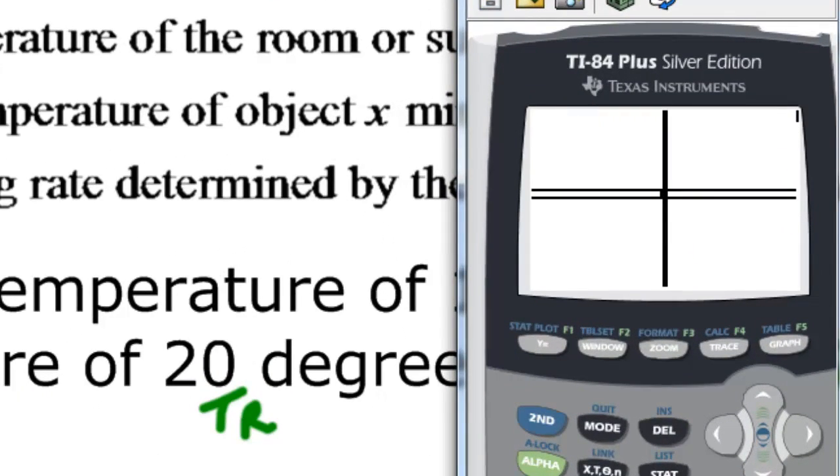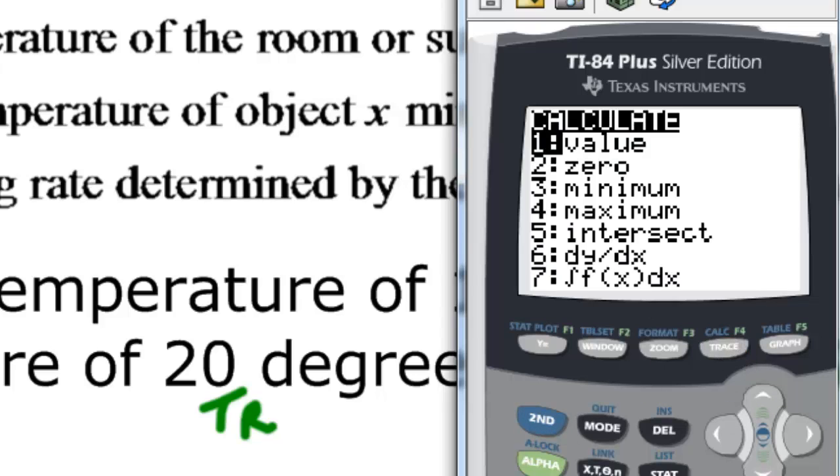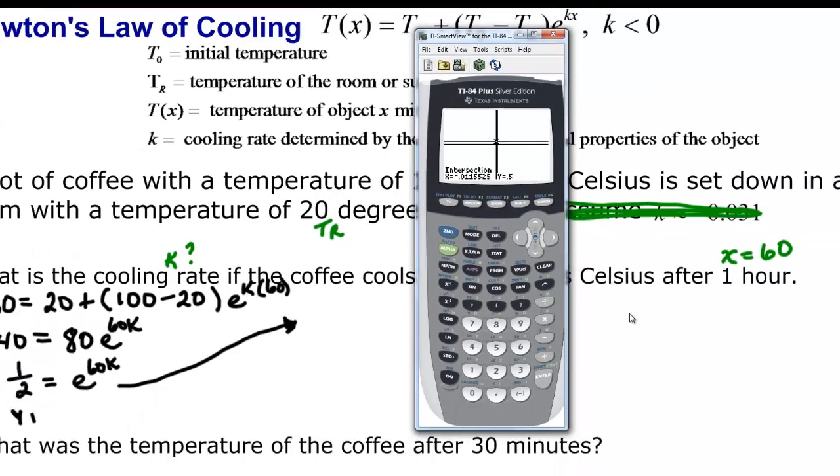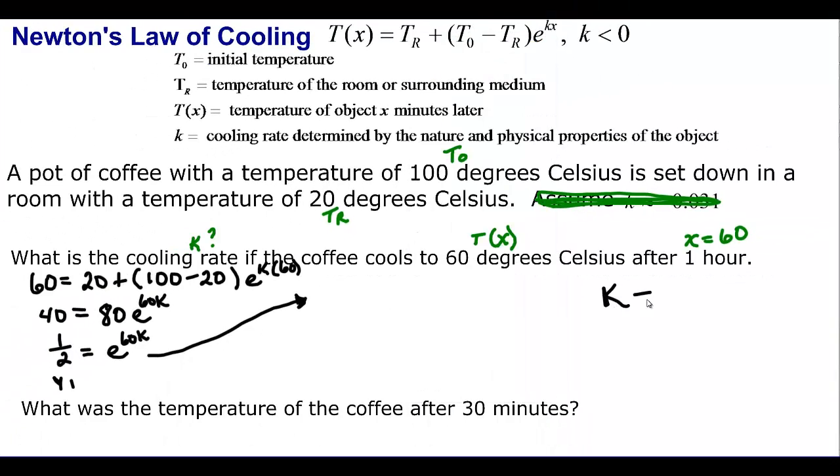There's our 1 half, and there's our exponential. It's so small, it's in here, but we could try a second trace now. So we could see something in there. Enter, enter, enter, enter, and it's going to give us negative .0115. And we're going to say that K is equal to negative .012.